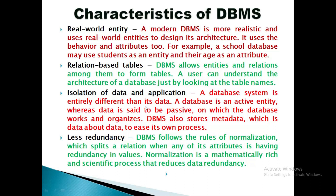Let's see one by one. First: Real World Entity. A modern DBMS system represents and stores real world entities and real world objects. This is why it uses real world entities to design its architecture. Every real world entity has functionality, which we call behavior, and attributes, which we call physical properties. For example, if a school has to create a database, students are the entity. Every student's functionality is their behavior, and attributes include the student's age, name, and similar properties. Real world entity is thus represented in DBMS.